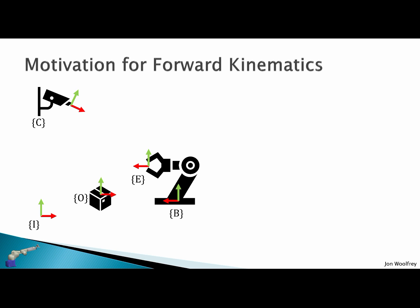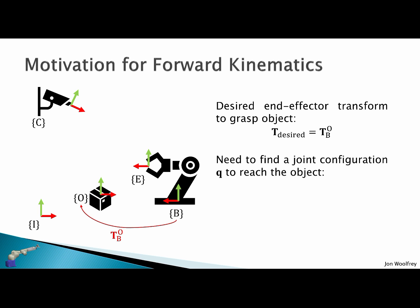So the motivation for forward kinematics: we have some robotic environment and we have a desired end effector transform to grasp an object. Then we need to find a joint configuration Q to reach the object. The base to the end effector must equal this desired transform.